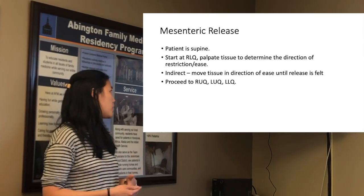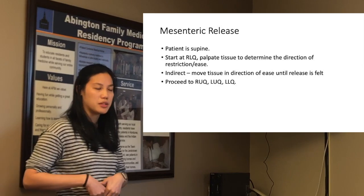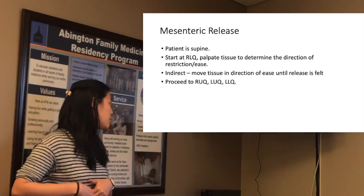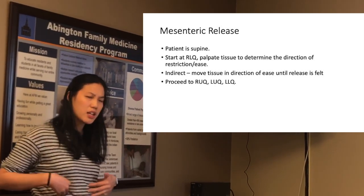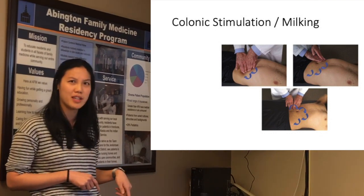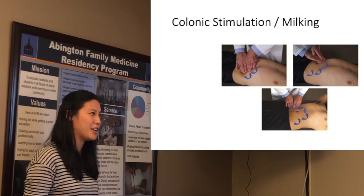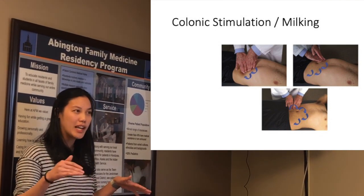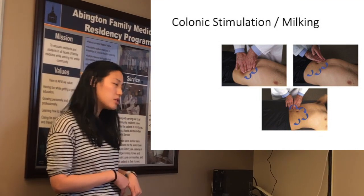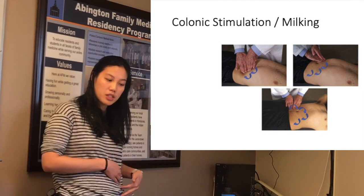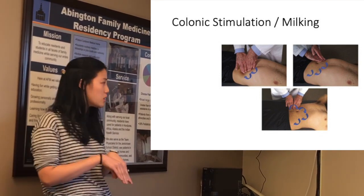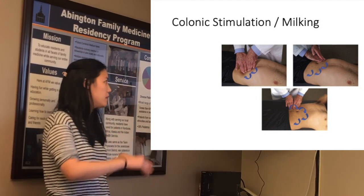For the mesentery release, have the patient supine. You start at the right lower quadrant — it's like a myofascial technique, so you work in a motion that finds the ease of tissue. Then you move upward: right lower quadrant, right upper quadrant, left upper quadrant. For colonic stimulation, also known as milking, you work on the left lower quadrant. You don't want to push when there's already a blockage on that side, so you push and empty out from the sigmoid, working in the other direction — a deep pressure and scooping motion to encourage stool movement.